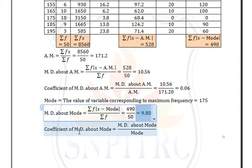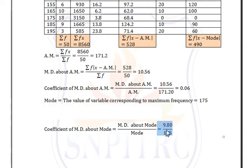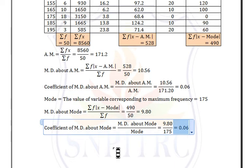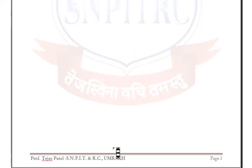The coefficient of mean deviation about mode = 9.80 / 175 = 0.06.